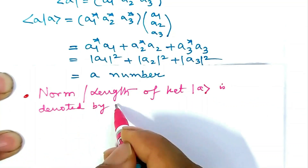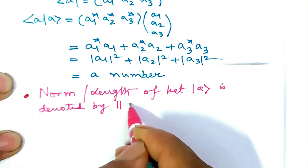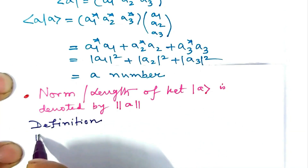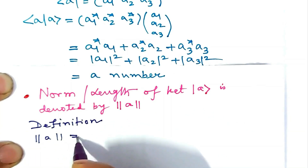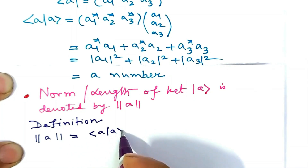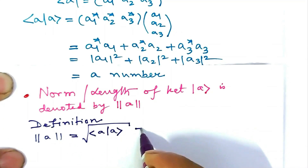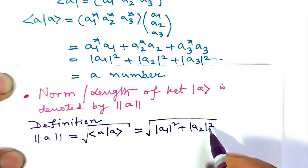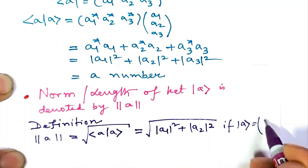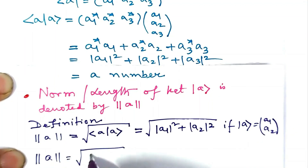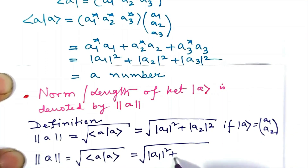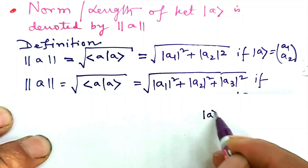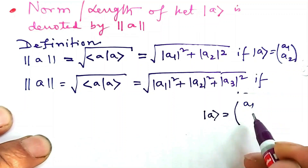The norm or length of a ket is denoted by the symbol double vertical bars around A. By definition, the norm or length of a ket equals the square root of the inner product bra A ket A. It equals √(|a1|² + |a2|²) if ket A is a 2×1 column matrix, and equals √(|a1|² + |a2|² + |a3|²) if ket A is a 3×1 column matrix (a1, a2, a3).